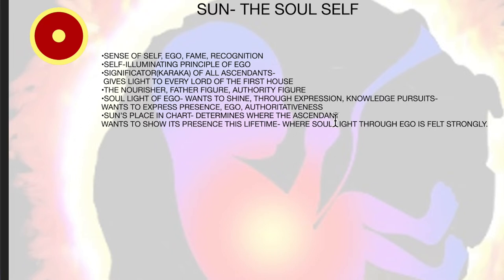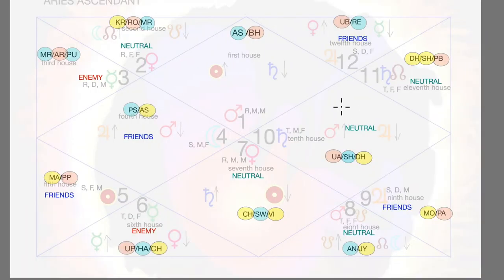Sun's place in the chart determines where the ascendant wants to show its presence — this lifetime around, just this lifetime. Even if you have taken 12 births and gone through all the 12 ascendants, you know pretty much what it feels like to be under each ascendant. This is why souls take multiple lifetimes to learn — where the soul light through ego is felt strongly. This is just a recap. Now let's see through the ascendants.